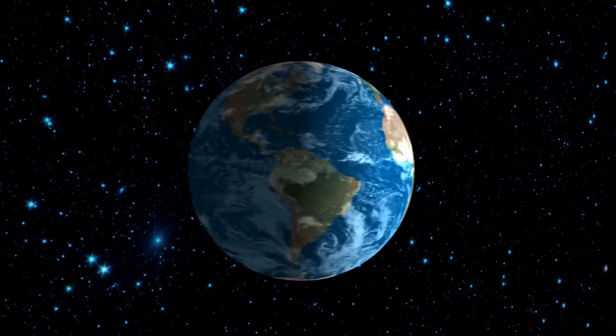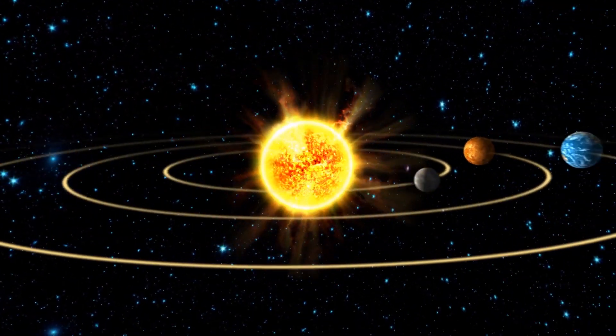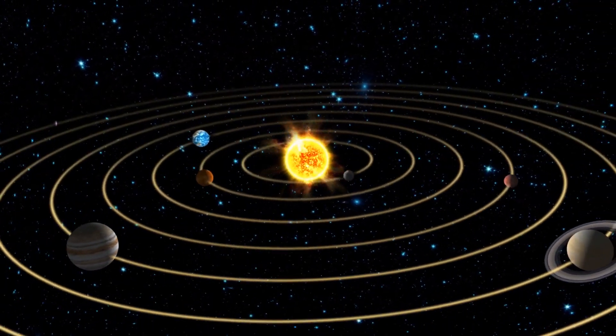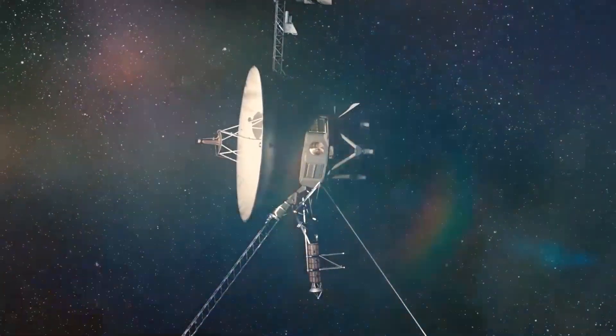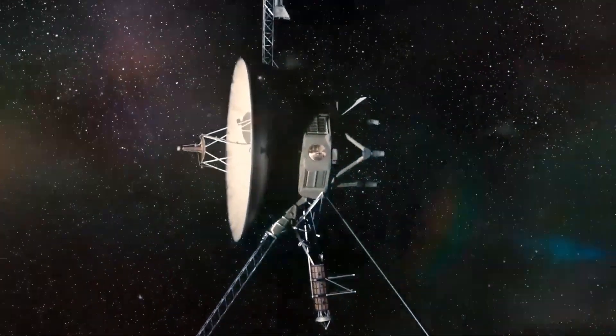One astronomical unit is the distance between the sun and earth, approximately 150 million kilometers. Voyager 1 did it years earlier because it had fewer diversions.